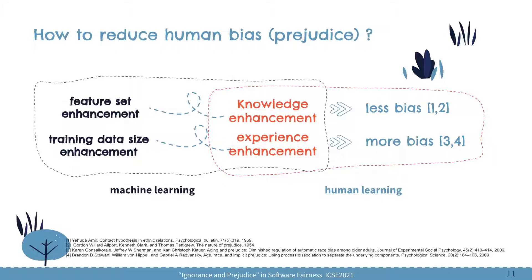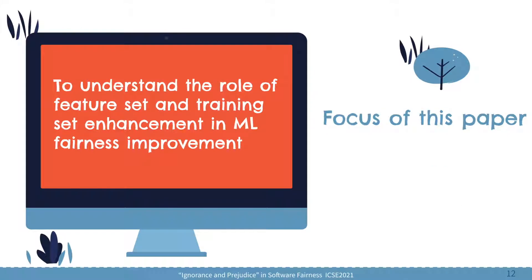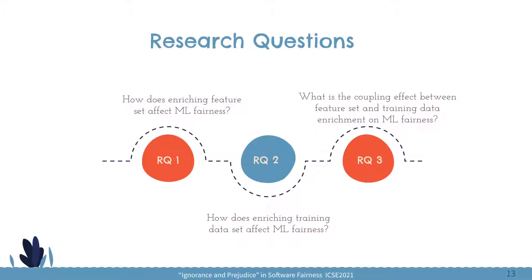For example, when we collect more features, it's very much like collecting more information to get more knowledge to learn more about an object. And similarly, there is this interesting connection between training data size enhancement and experience enhancement. Realizing this interesting connection between machine learning and human learning, the focus of this paper is to understand the role of feature set and training data set enhancement in machine learning fairness improvement through an empirical study.